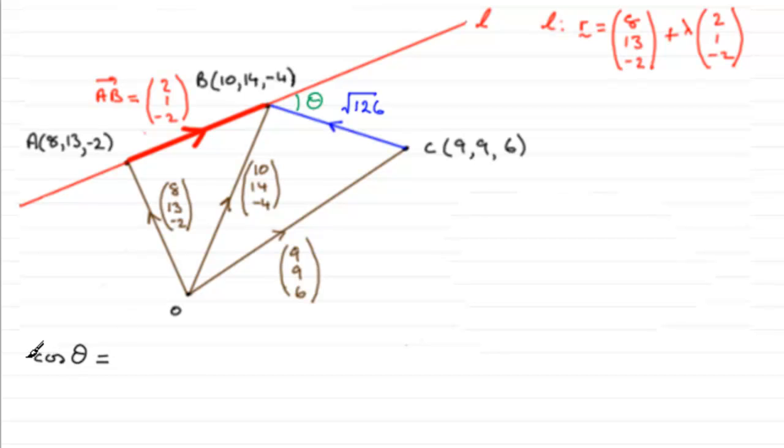So basically, it's the cosine of theta is equal to two vectors dotted together, two vectors in the directions that you want, and I'm going to look at the vector C to B and the vector A to B.